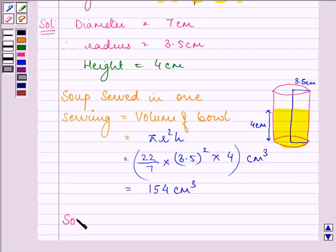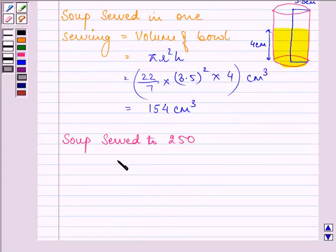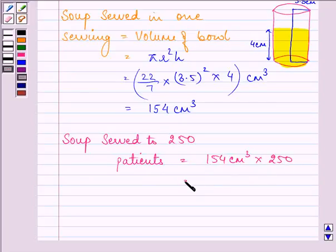Soup served to 250 patients will be equal to 154 cm³ × 250, which is equal to 38,500 cm³.